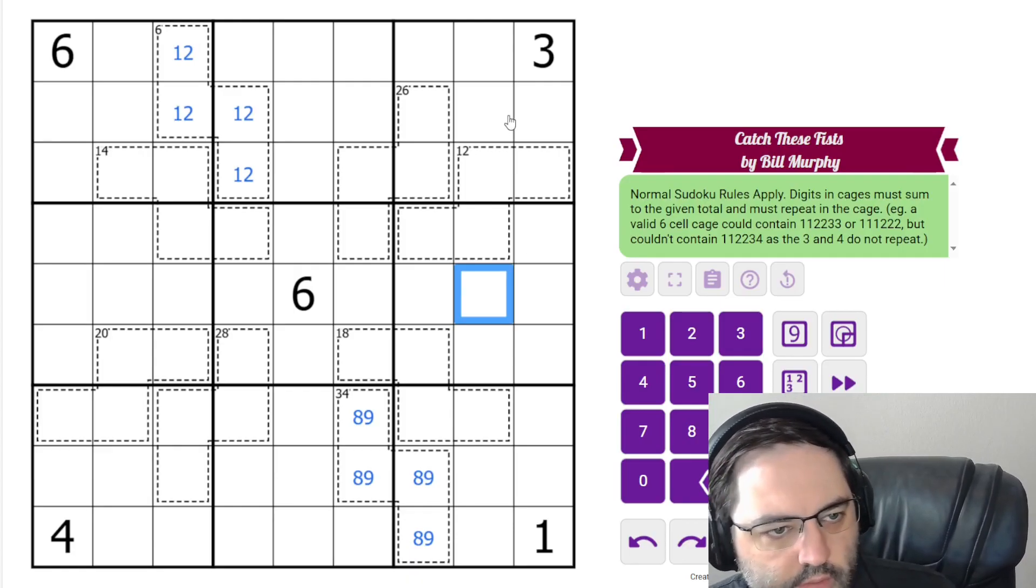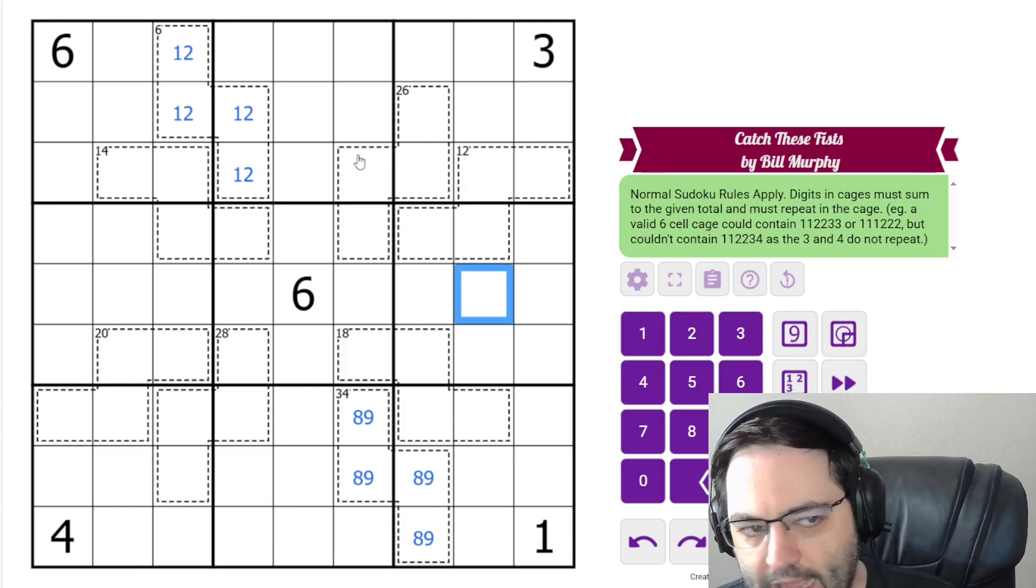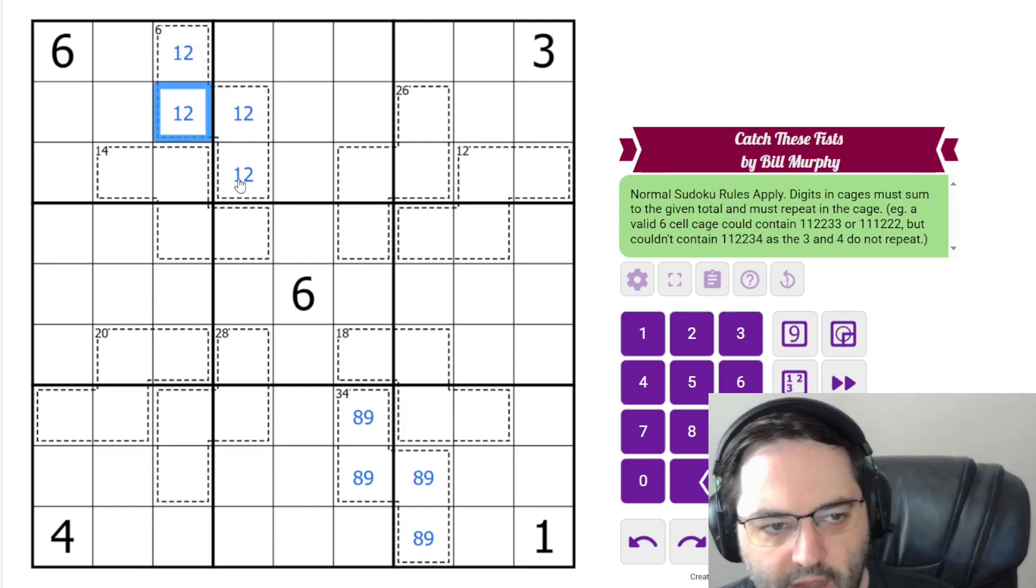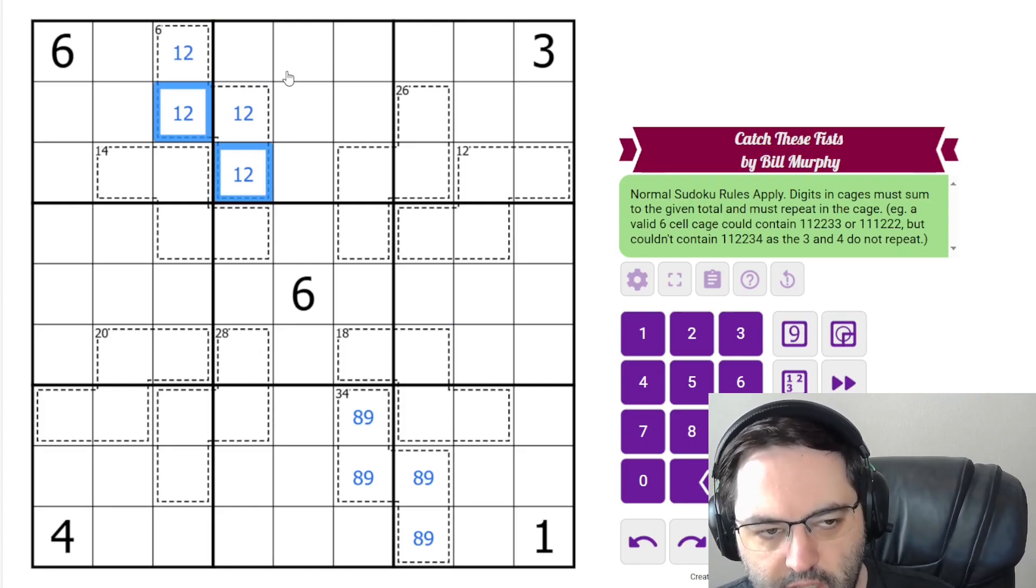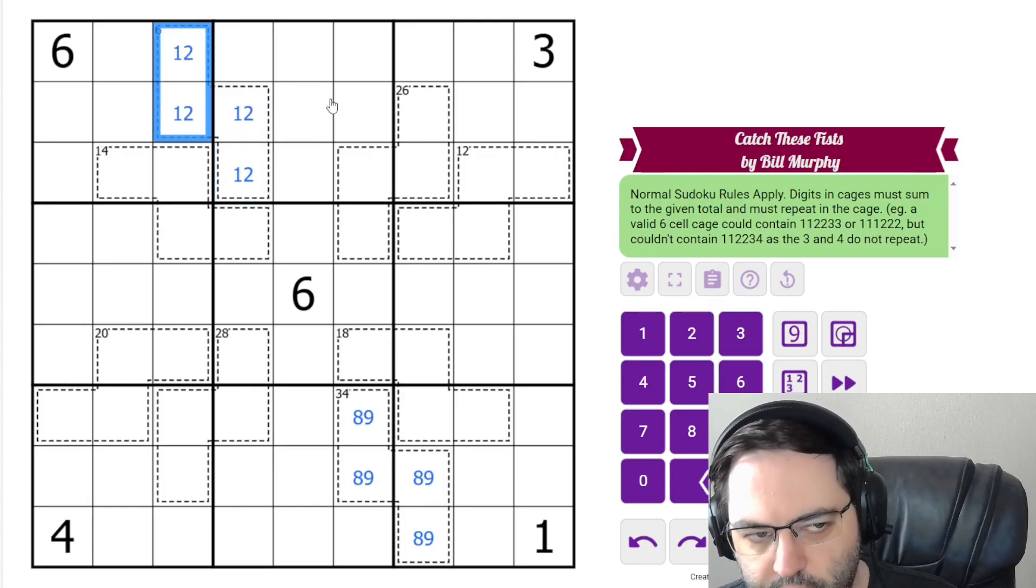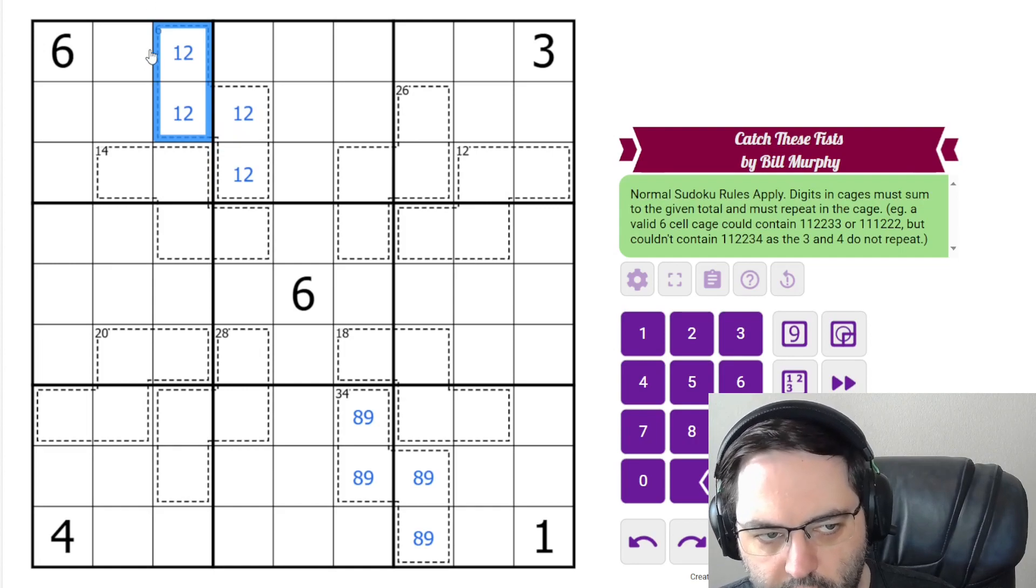And now we're going to think about the rest of these by cutting them in half, because we know all of them have a pair of repeated digits. So if we think about what that means, if these are the same and these are the same, these two must sum to half of whatever the total is. These sum to three, these sum to three.